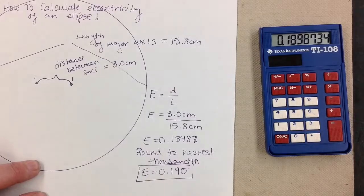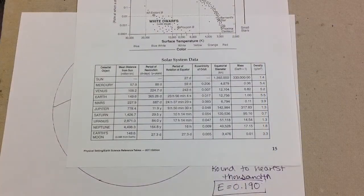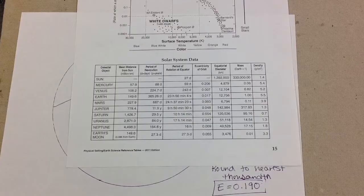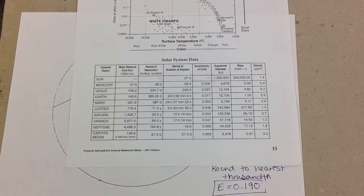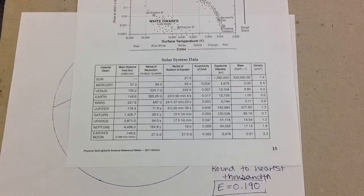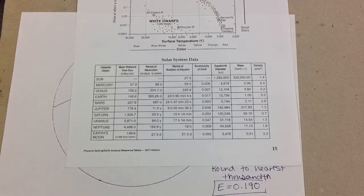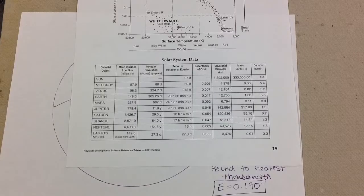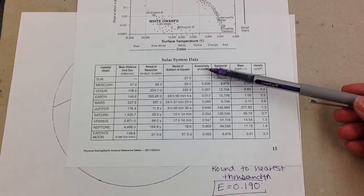So if we take a look at our value that we just calculated, the eccentricity, because we rounded to the nearest thousandths, we have our value of 0.190. If we go up and look at our reference table on page 15, we'll see that there is a column called eccentricity of orbits.